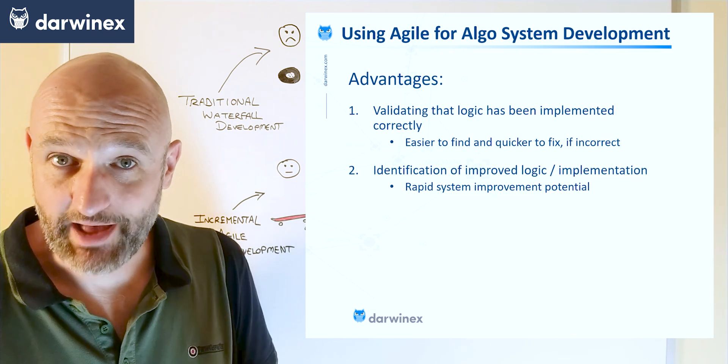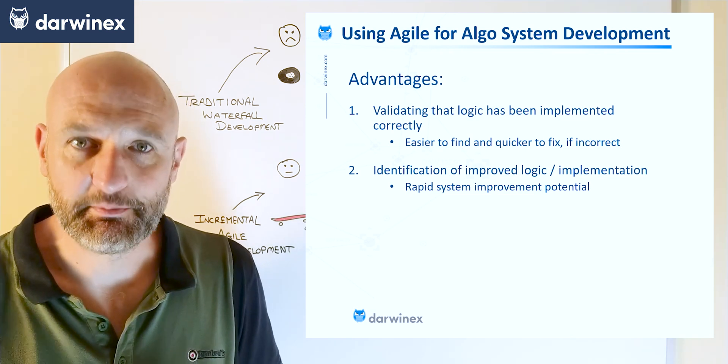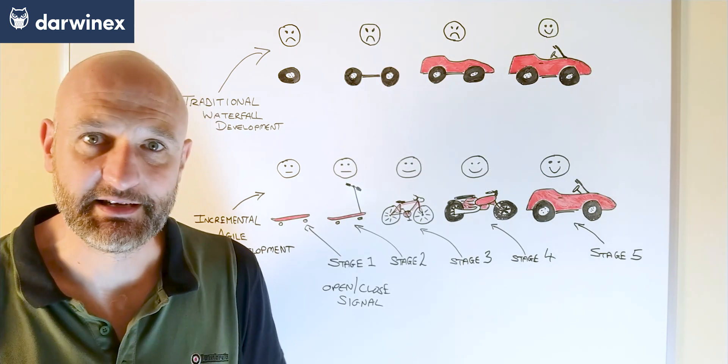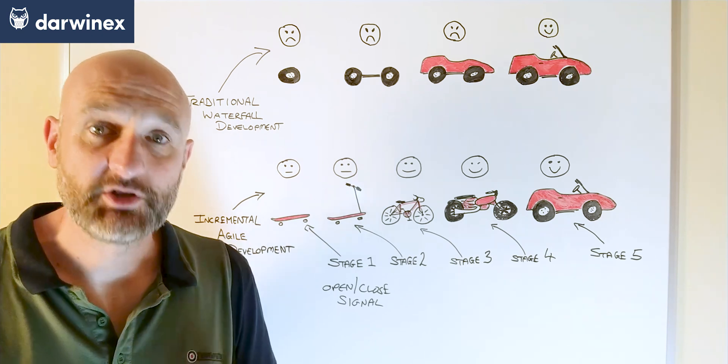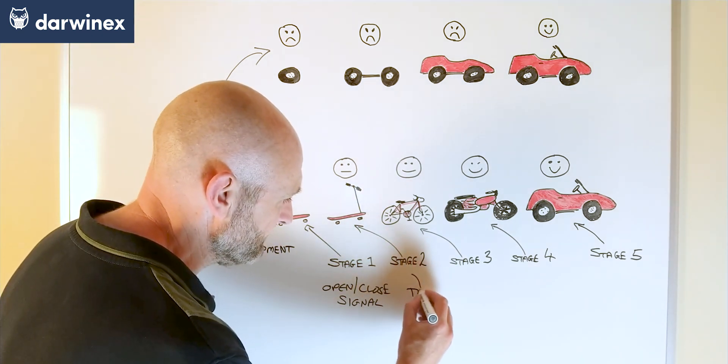So when and only when we're completely happy that we've implemented the signal in the best possible way, and that it's working fully as expected, do we move on to the next stage. So here at the next stage, we might, for example, implement a trend filter.